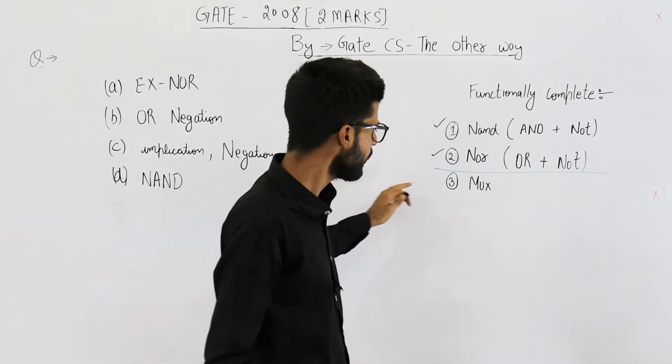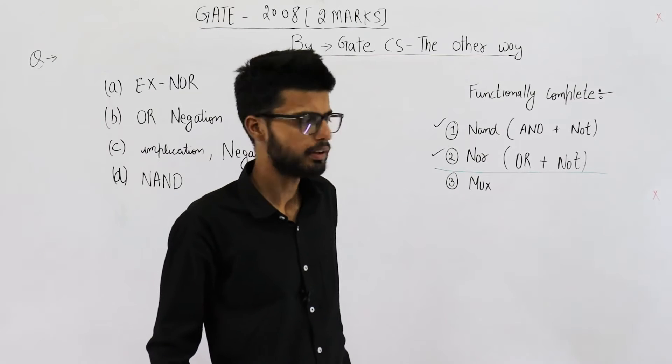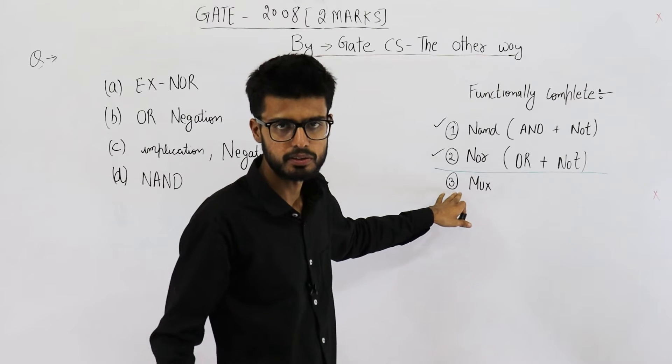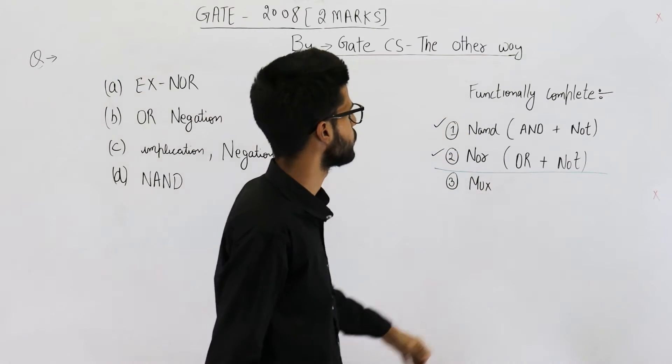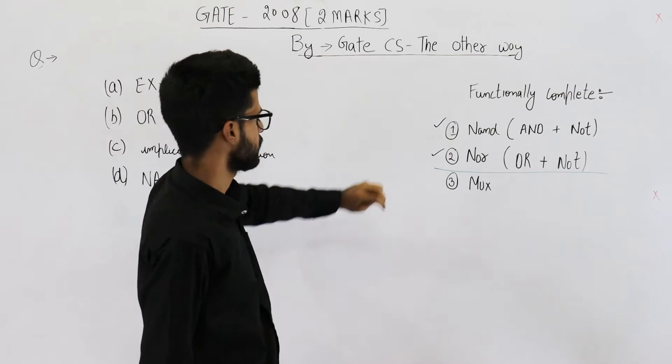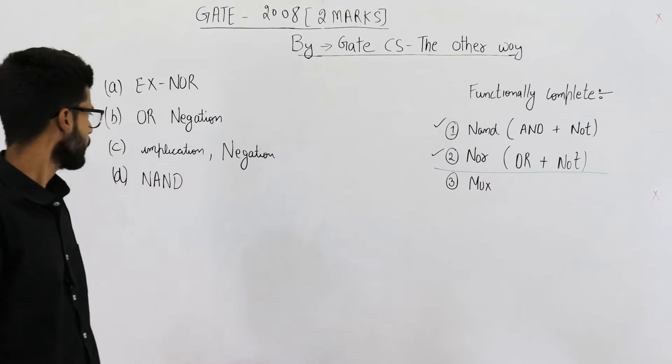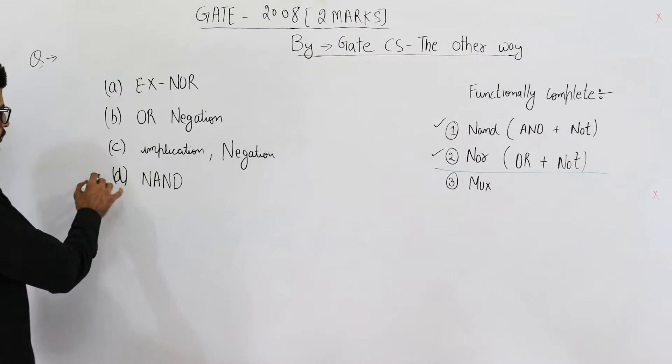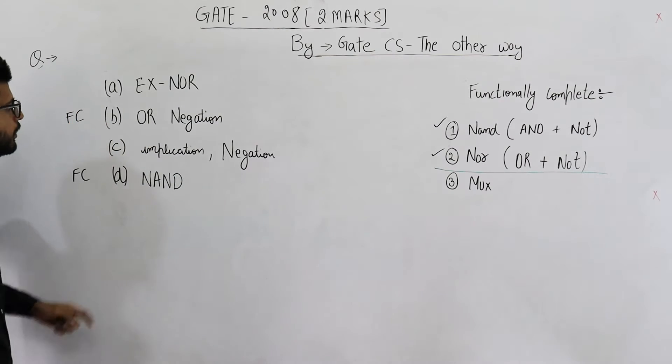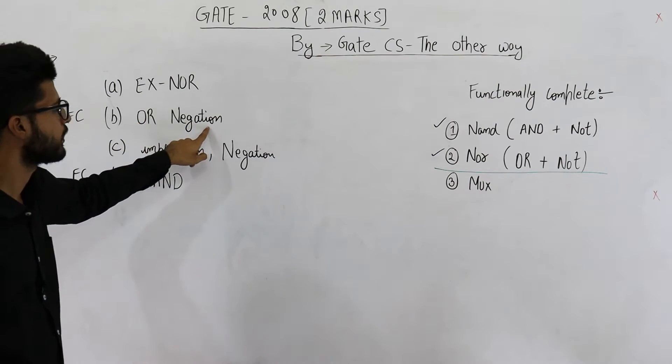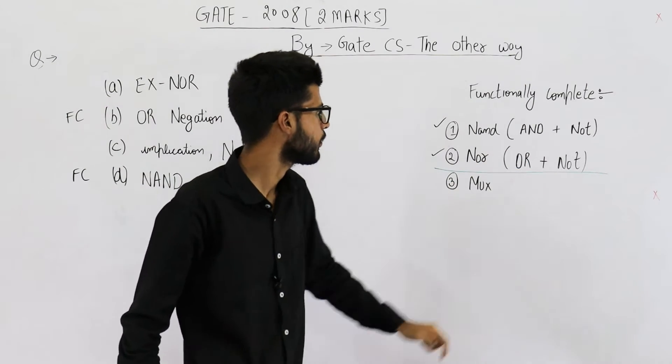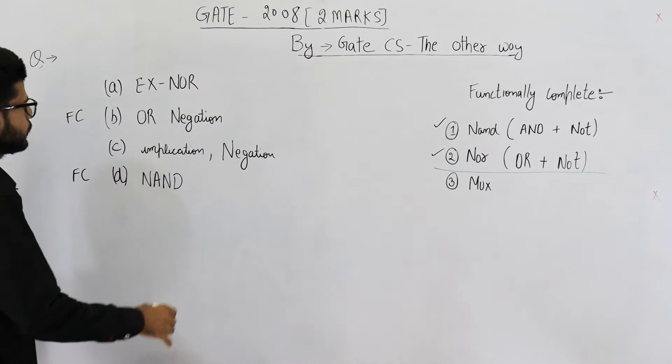Multiplexer is functionally complete, but the basic unit for implementing a multiplexer is the gates only. These two circuits are functionally complete. This one is functionally complete as well as this one is functionally complete because OR plus negation can make NOR. NOR is OR and NOT.